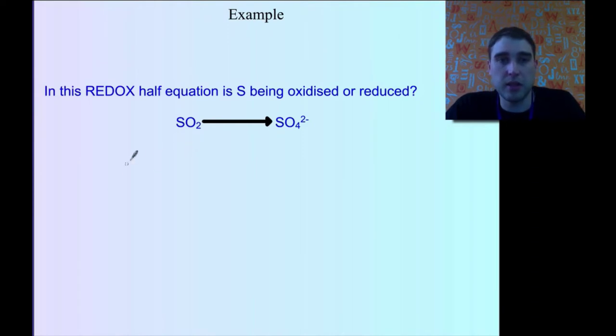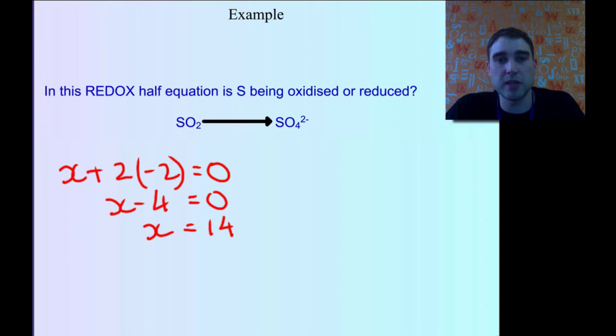Over here, we've got x plus 2 times minus 2 equals 0 because there's no charge up here. So x minus 4 equals 0, which means x equals plus 4. Remember to always write the charge down.